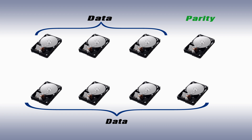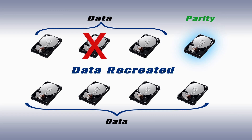For example, in a 7-plus-1 RAID 5, the data is broken into 8 fragments, one of which is parity, and any 7 of the 8 fragments recreates your data.